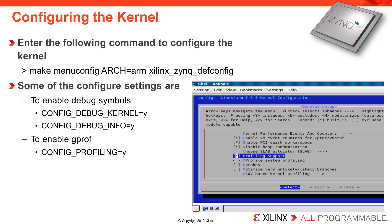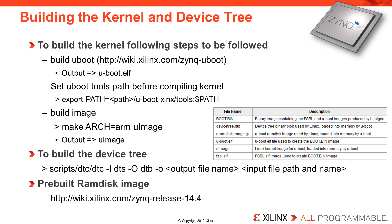Open the Xilinx Zynq defconfig file to view the different configuration settings. This example shows the debug symbols and profiling enabled. To build uBoot, please refer to the link shown here. Then set the uBoot tool path before compiling the kernel.